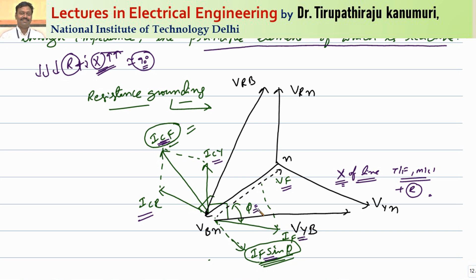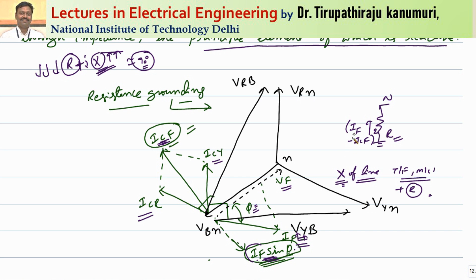Since phi is less than 90 degrees, in order to get the required value of IF sin phi, the fault current IF required will be very high. This fault current returns through the fault resistance or ground resistance, passing a current equal to IF minus ICF. Due to this, I-squared times the neutral resistance produces heat — a continuous power loss. The disadvantage of resistance grounding is this huge power loss whenever fault current passes.